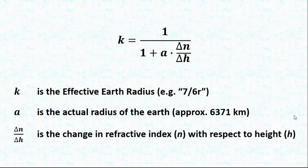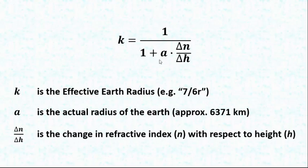So we have K — the effective Earth radius, or the multiplier of the radius, so this is the 7 over 6R. We have term A, which is the actual radius of the Earth, and for that we're going to use 6,371 kilometers. And then we have this term delta N over delta H. Delta means 'change in'; N is the refractive index; and H is the height, also measured in kilometers. So this term is the change in refractive index with respect to the change in height.